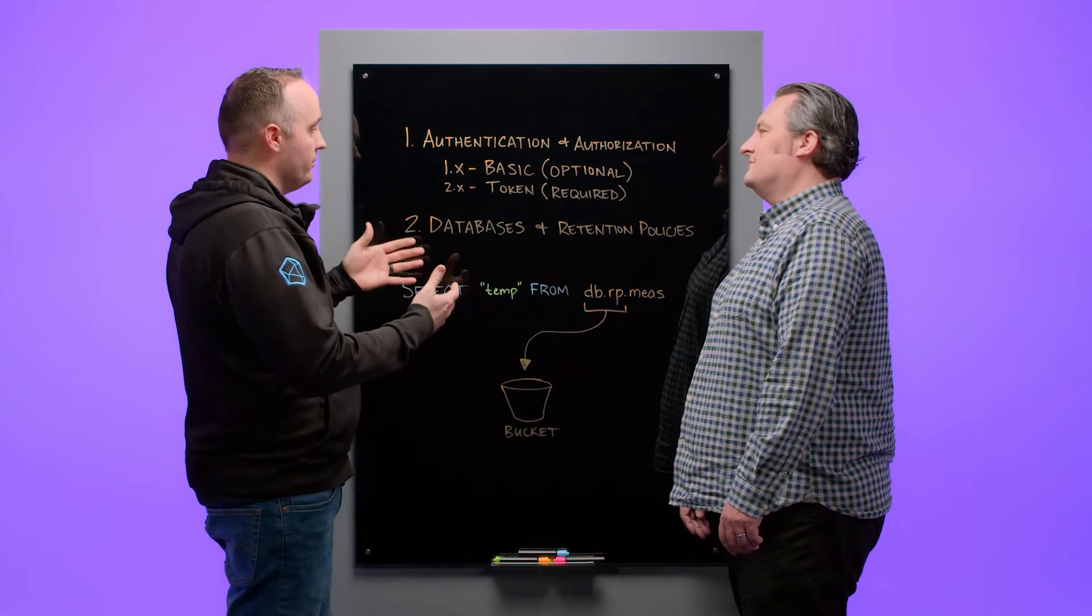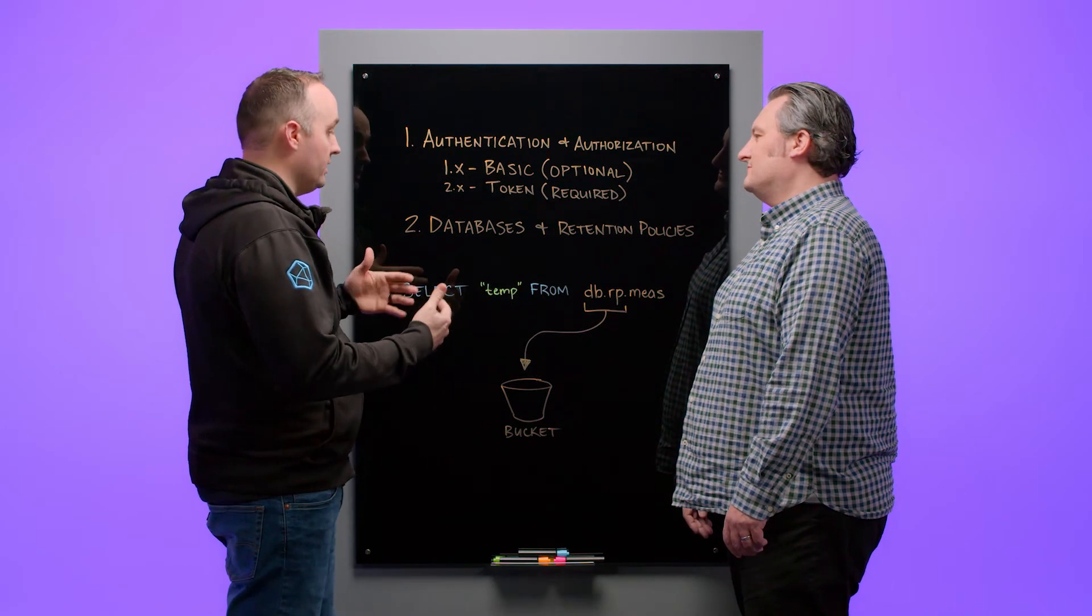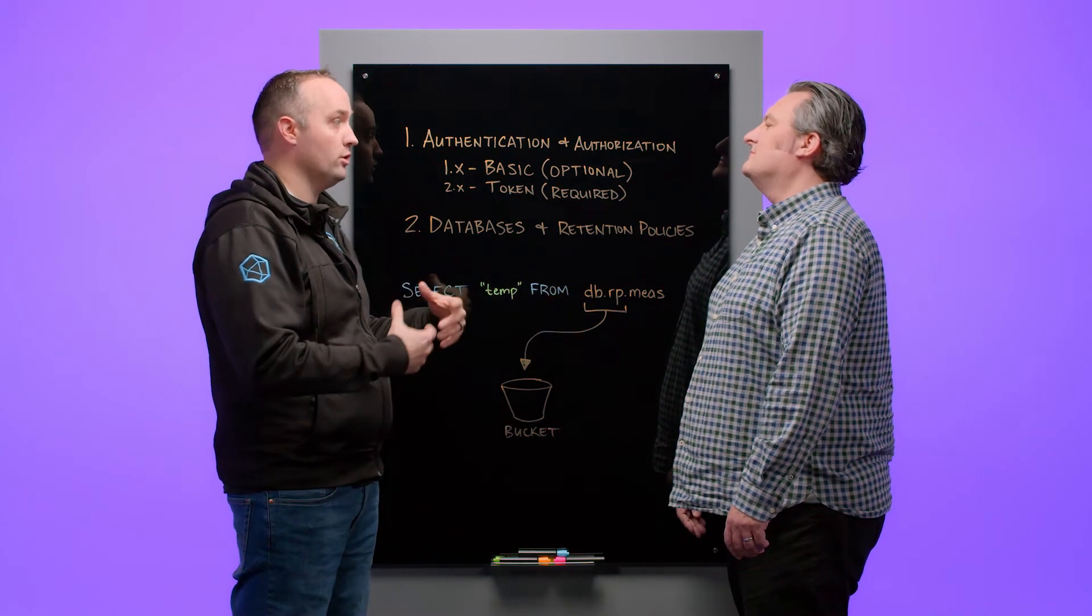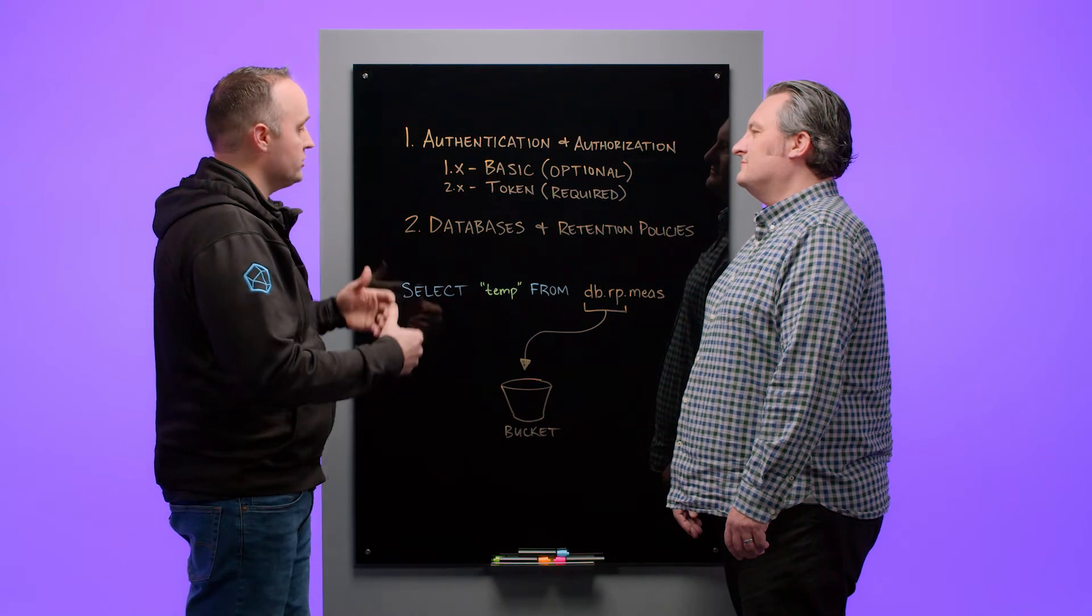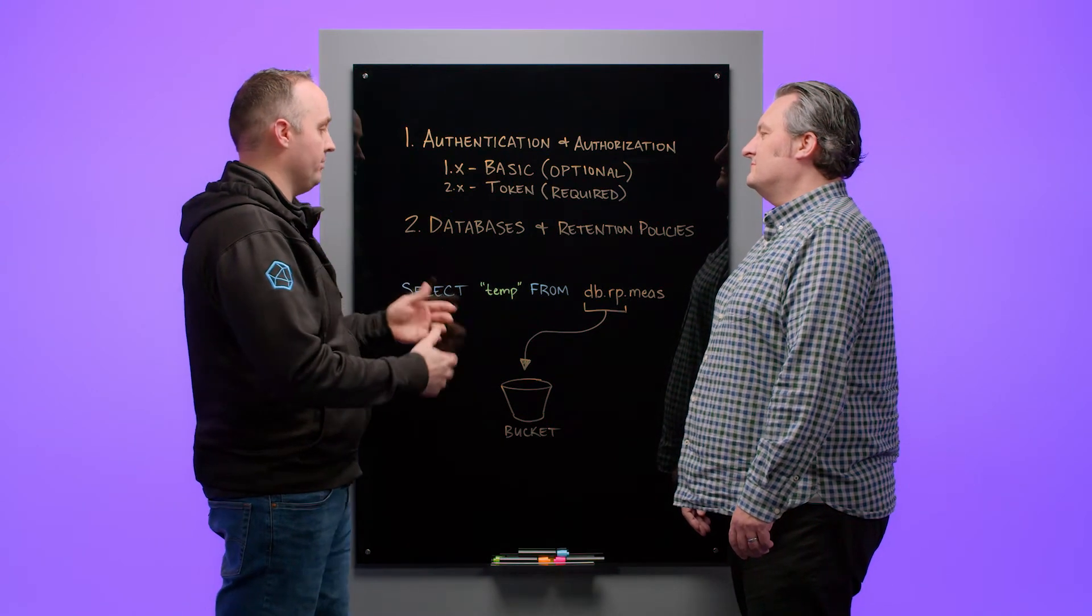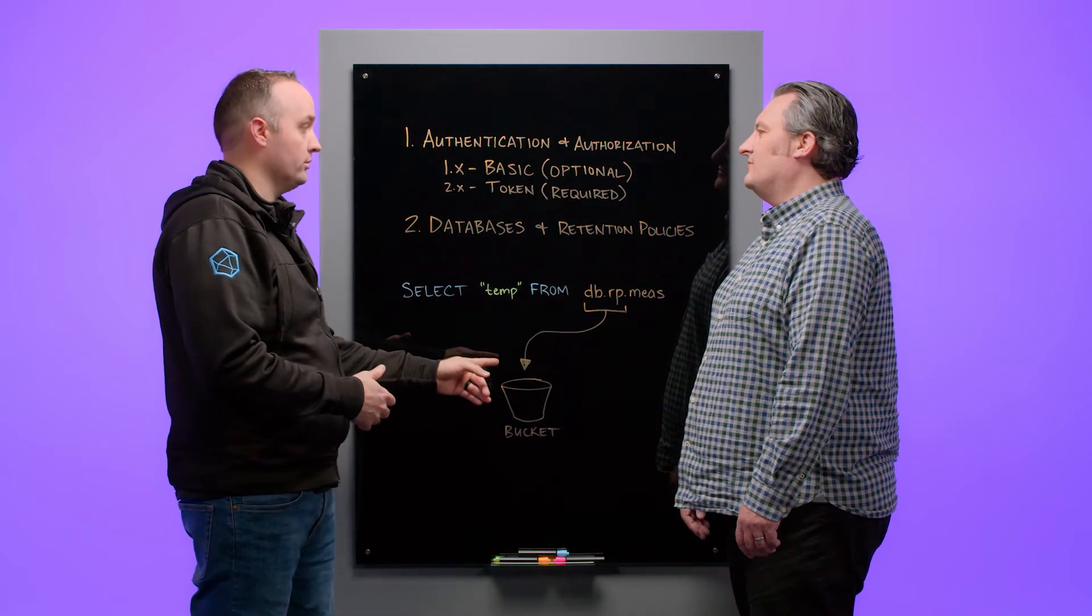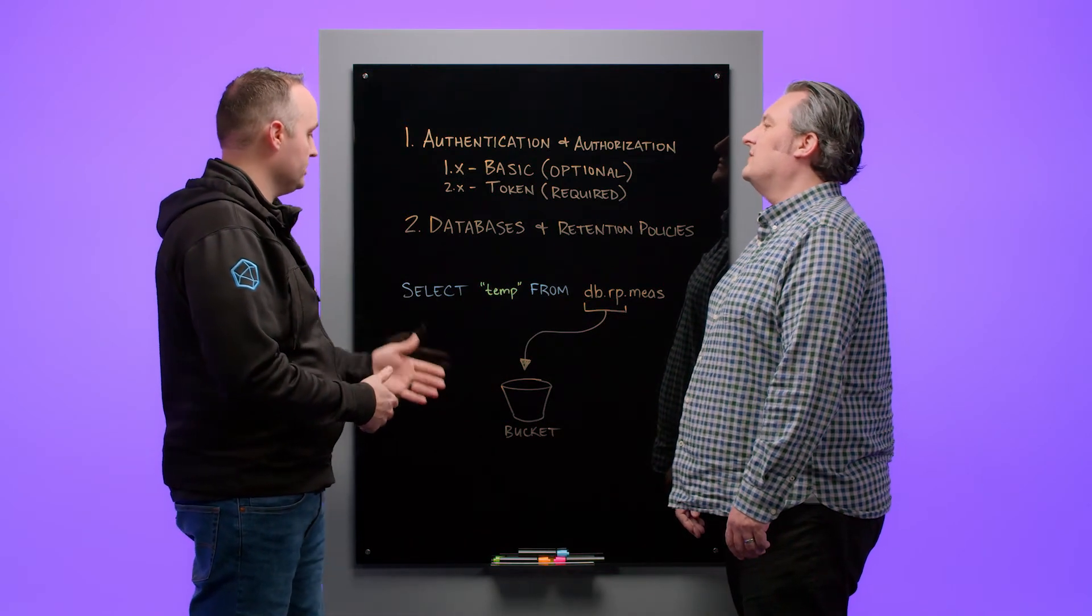So in order for InfluxQL to query data out of a bucket, InfluxQL depends on a database and retention policy combination to know where the data is coming from. So what you need to do is you need to map each database and retention policy combination to a 2.x or Cloud bucket.